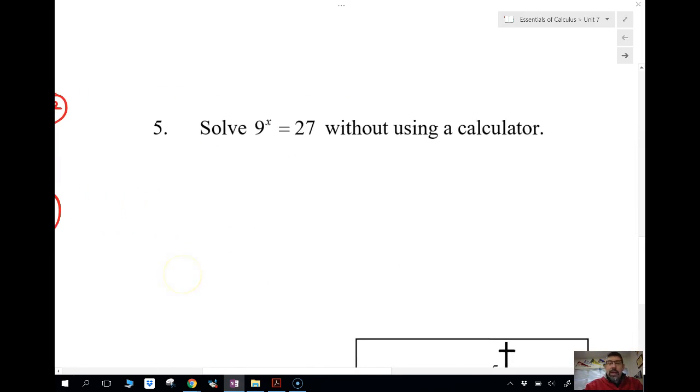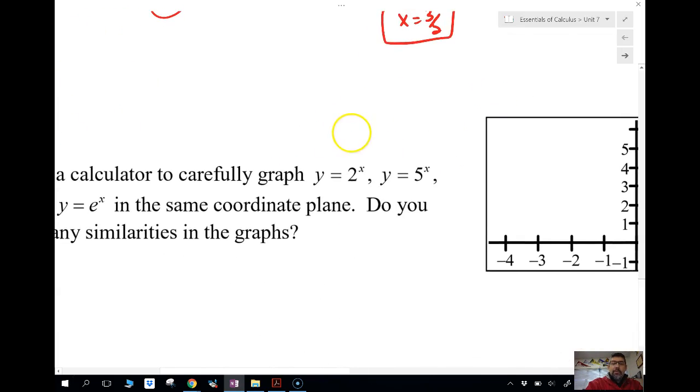Let's solve this without using a calculator. We're going to need to make these into, in this case, since we know 9 is a power of 3, and we know 27 is a power of 3, we can make them both the same base. And then we can just do 2x equals 3, x equals 3 halves. That's all you got to do for that one. If they were not the same base, then we would need to be using logarithms, which I'll get to later on in a different video.